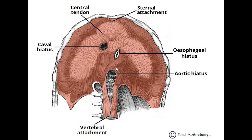The last opening is the aortic hiatus. When you hear aortic opening, you'd expect the aorta to pass through — and it does. Also passing through are the thoracic duct and the azygos vein. A mnemonic to remember: ATA — Aorta, Thoracic duct, Azygos vein.